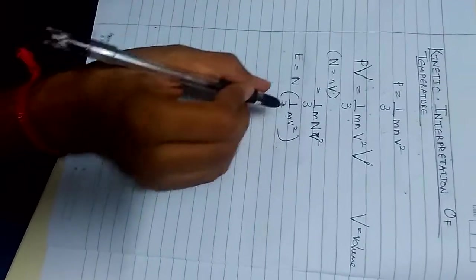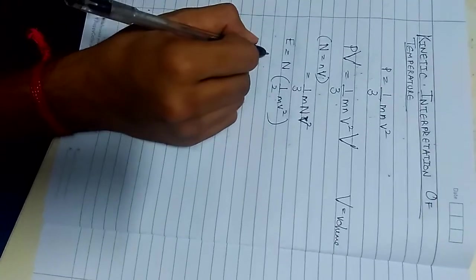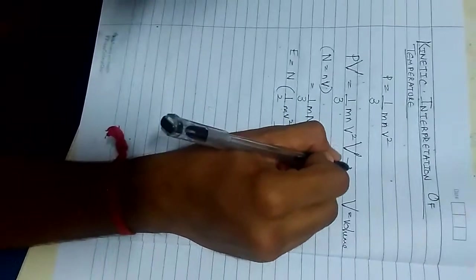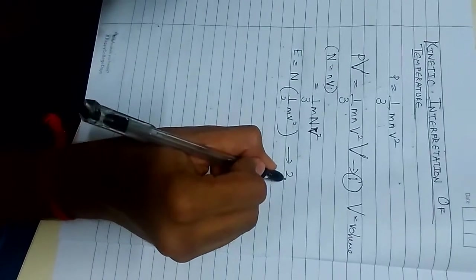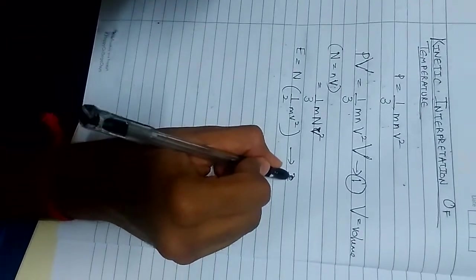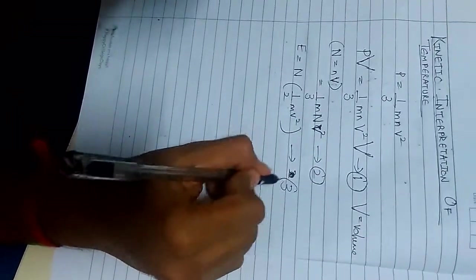E is equal to n into half mv square. Let us see, this is equation 1 and this is equation 2 and this is equation 3.